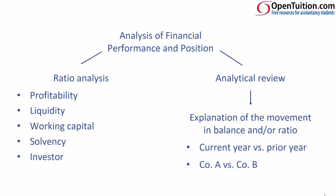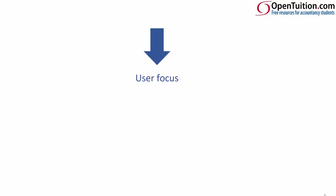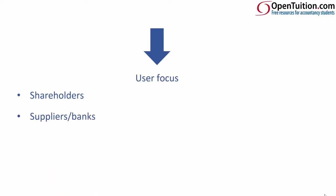That is a little bit more challenging as it usually encompasses the 'select all' type of question. When you're thinking about the analytical review, always think about user focus, because there could be a user focus given to you within the question. Users of the accounts could include shareholders, suppliers, banks as providers of finance, competitors, the government, and customers. For now, we'll consider those five. I want you to take a few minutes to think about what each user would require when looking at the ratios and balances — would they prefer to focus on performance, liquidity, working capital, solvency, or investor ratios? I'd recommend you pause the video and have a think about it.